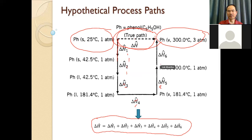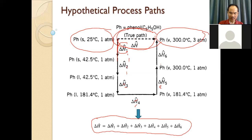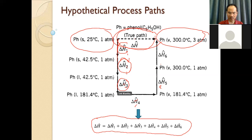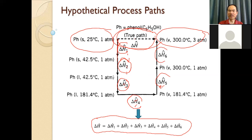For the entropy incorporated in the first step, we calculate entropy based on temperature change. The second step is entropy based on phase change. The third step is temperature change again. The fourth step is another phase change. The fifth step is temperature change, and the last step is pressure change. We need to know how to calculate entropy for each of these process types: phase change, temperature change, and pressure change.